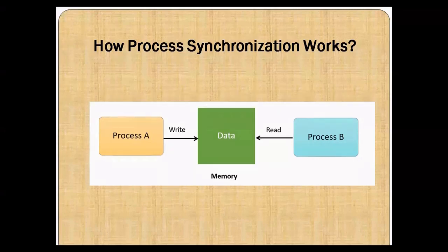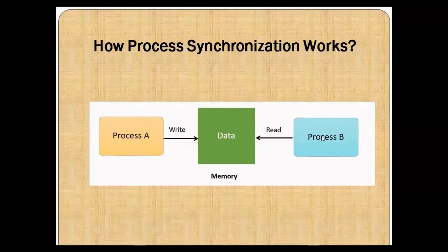Let's see how process synchronization works with the help of this diagram. We can see process A is performing a write operation on some data. If at the same time process B is generated and starts reading that data while process A is still writing to it, then the data that process B receives may be inconsistent. To manage that type of inconsistency, the processes need to be synchronized with each other.